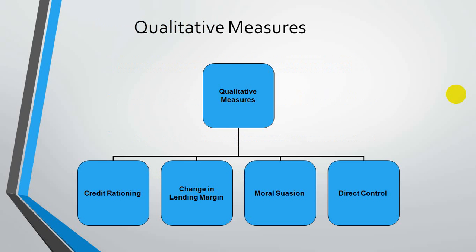Having covered quantitative measures dealing with the volume of credit available in the economy, we now move to qualitative measures. Under qualitative measures there are four tools: first, credit rationing; second, change in lending margin; third, moral suasion; and fourth, direct control.